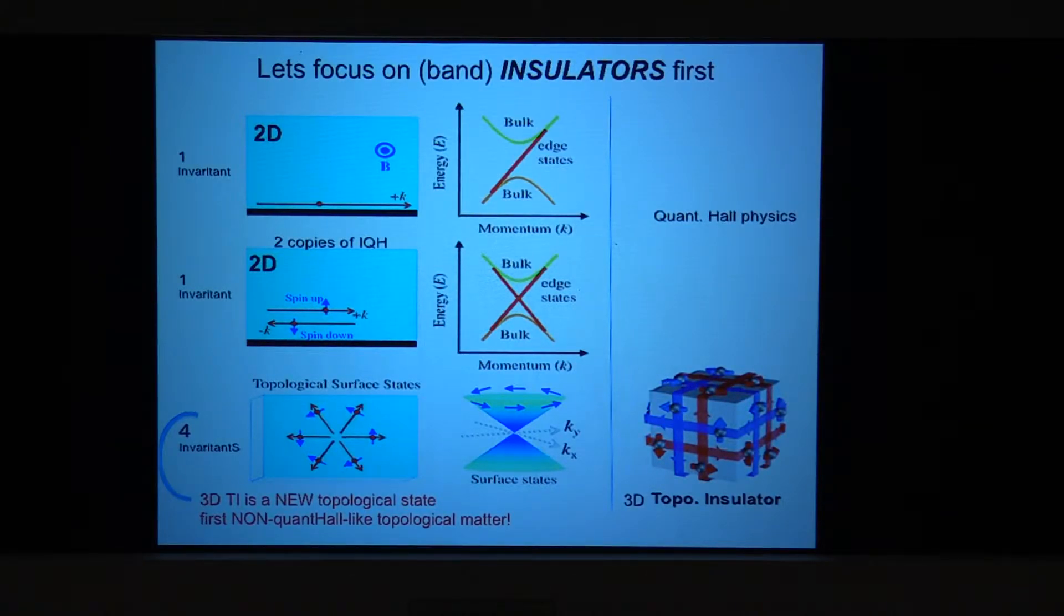So now that also gives us a tremendous experimental challenge. How do we prove this state exists? Because all the technology, transport and all of that, it came from quantum Hall effect. The integer quantum Hall effect was discovered experimentally. That methodology, how to establish topological character of a state experimentally, that methodology is well-known and well-established. You just apply.